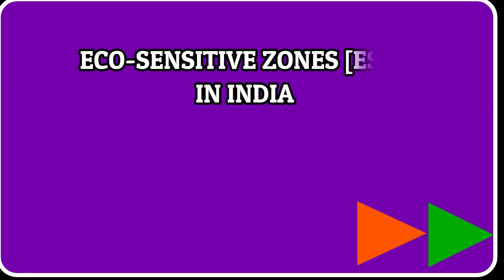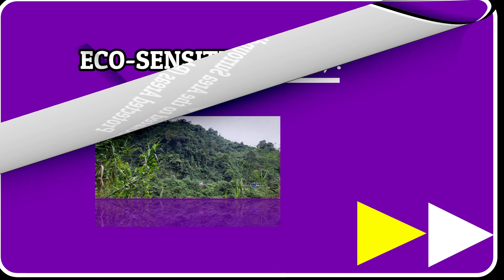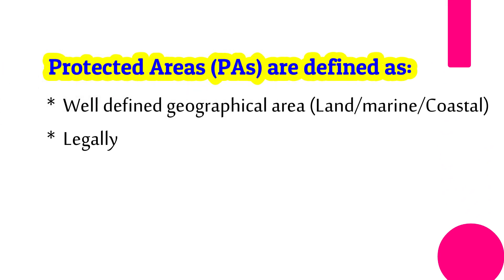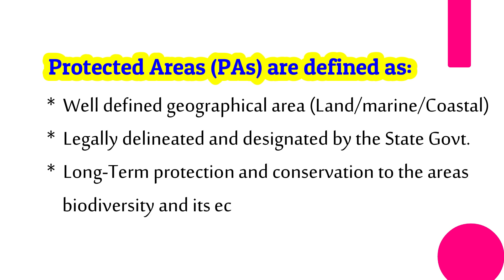The term eco-sensitive zones in India is linked to the area surrounding notified and established protected areas. Therefore, to clearly understand eco-sensitive zones, it is convenient to first be clear about what protected areas are. A protected area comprises a well-defined geographical space of land, marine, or coastal areas which are legally delineated and designated by the state government for the purpose of providing long-term protection and conservation to the area's biodiversity and ecosystems.